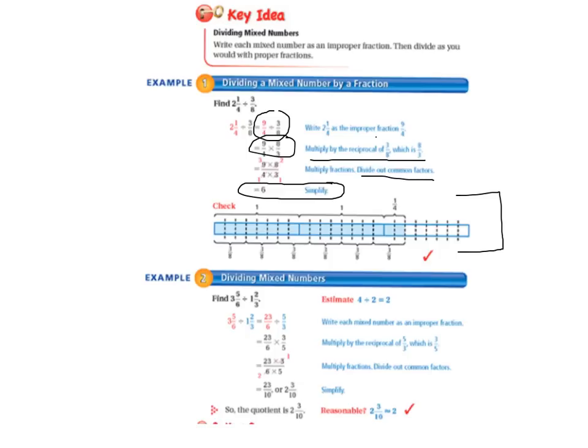Let's look at example 2, Dividing mixed numbers. We're dividing 3 and 5/6 by 1 and 2/3. We're going to estimate that. 3 and 5/6 is close to 4, and 1 and 2/3 is close to 2. 4 divided by 2 equals 2. So we multiply 6 times 3, which is 18, plus 5 is 23, over 6.